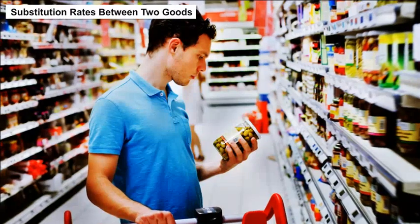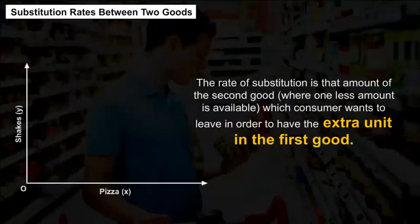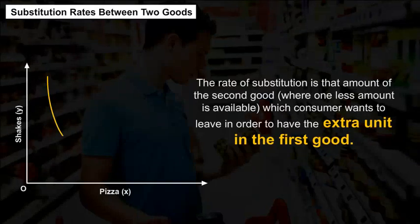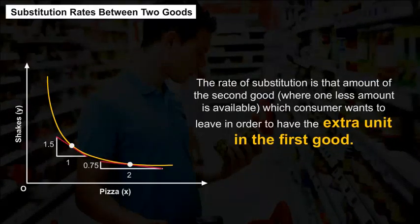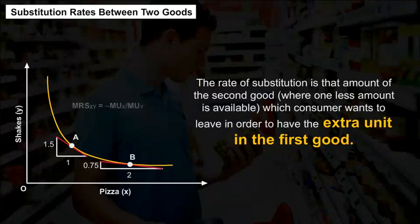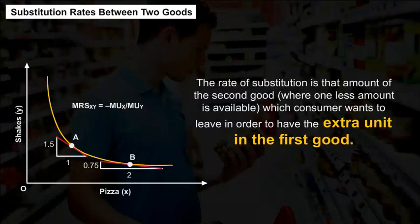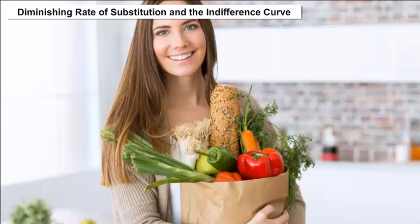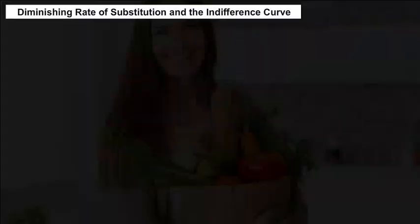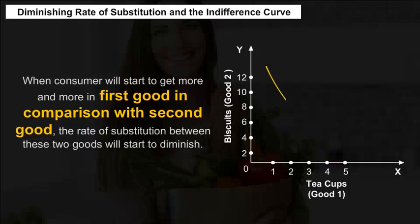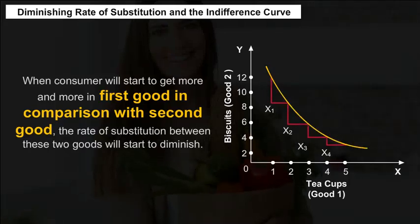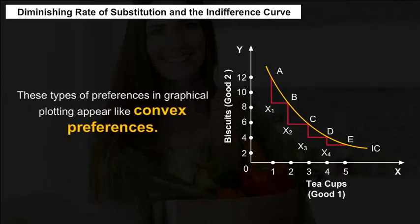Substitution rates between two goods: The rate of substitution is the amount of the second good that the consumer is willing to give up in order to have one extra unit of the first good. Diminishing rate of substitution and the indifference curve: When a consumer gets more and more of the first good relative to the second good, the rate of substitution between these two goods starts to diminish. These types of preferences appear as convex preferences when graphically plotted.